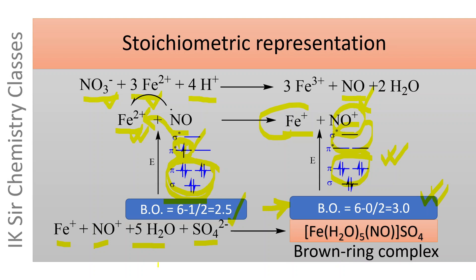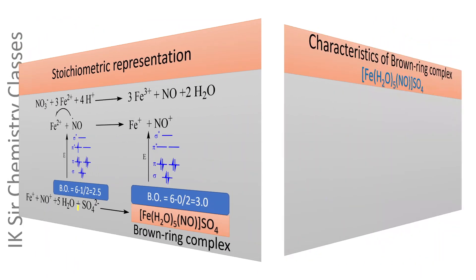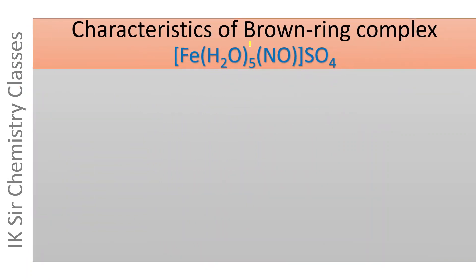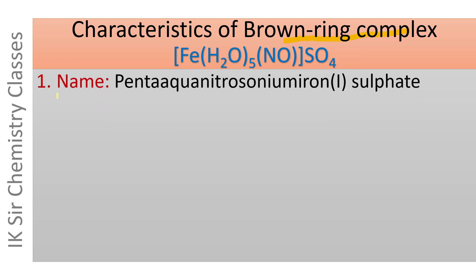It must be noted that the oxidation number of iron in the brown ring complex is +1. The IUPAC name of the brown ring complex is pentaaquanitrosonium iron(I) sulfate.